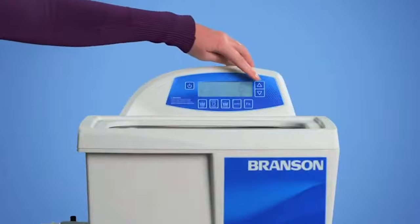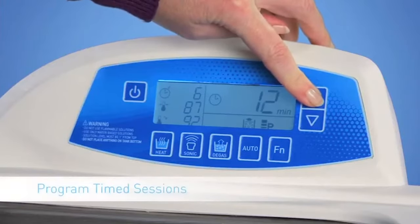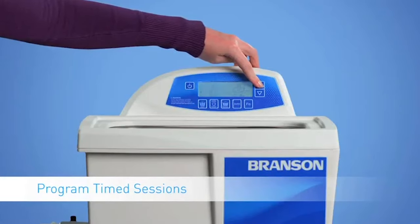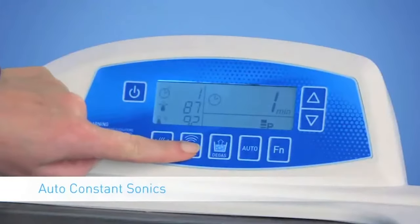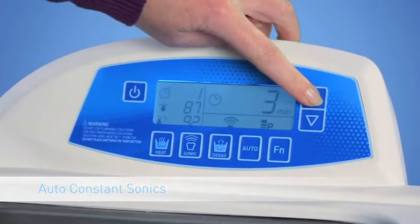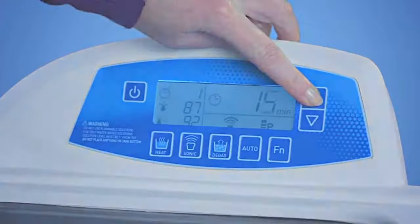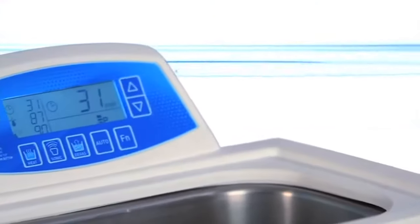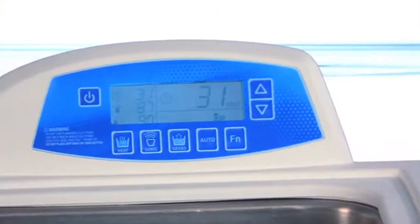Start by setting your cleaning time. You can choose timed increments of up to 99 minutes, or get the flexibility of continuous cleaning with the Constant Sonics mode. Either way, just set your digital Branson Sonic and forget it. The new digital series of Branson Sonic Baths ensures the most consistency from batch to batch.